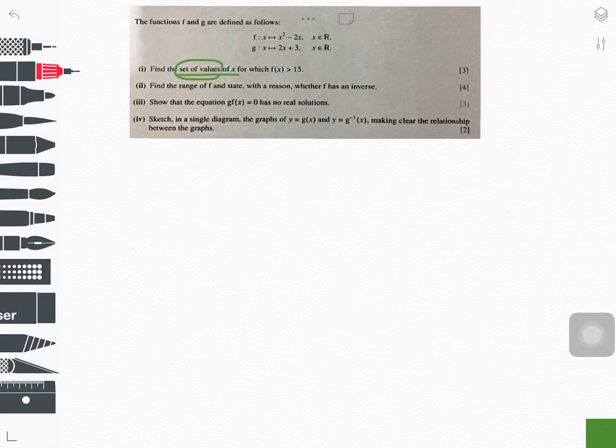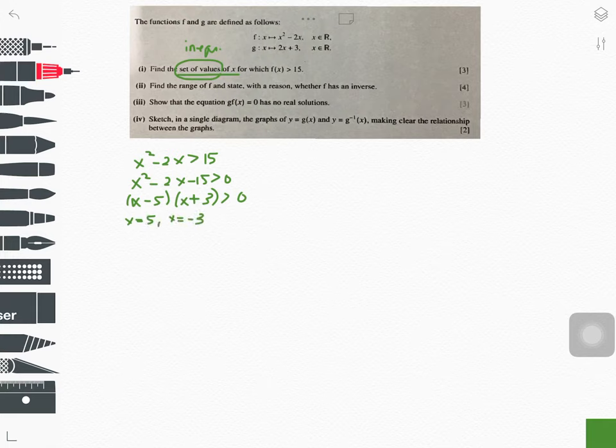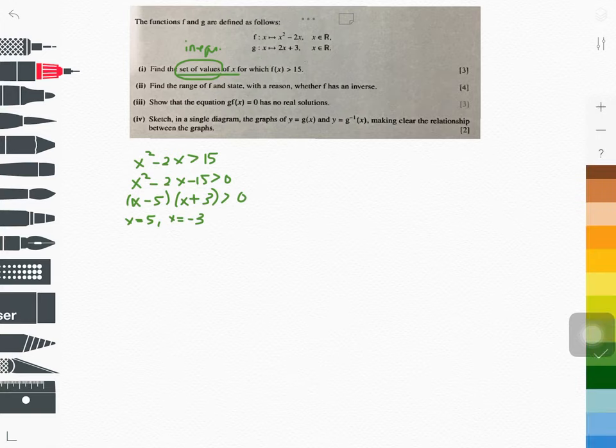Set of values tells you the answer must be an inequality. So let's try x squared minus 2x more than 15. I think you can do this easily, then you will factorize quite simply here. What are your critical values? x equals 5, x equals negative 3.